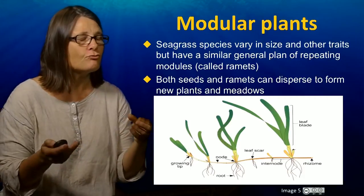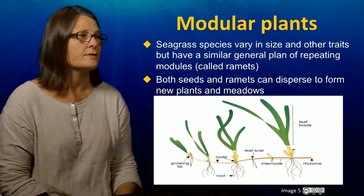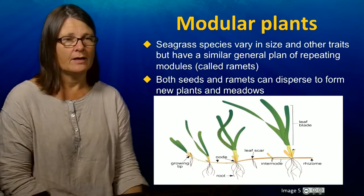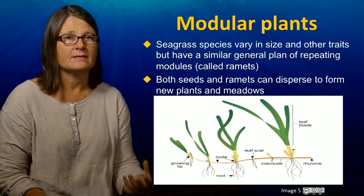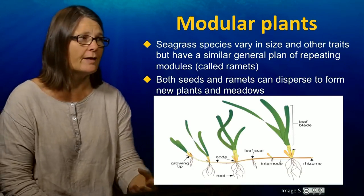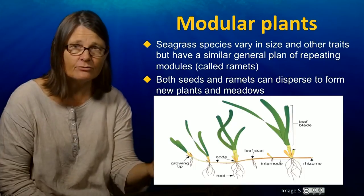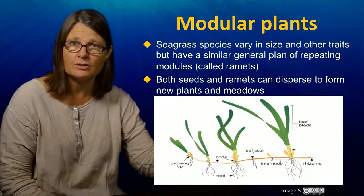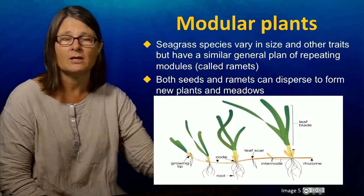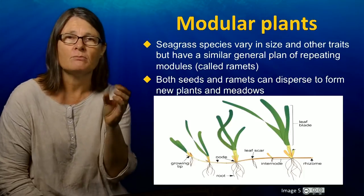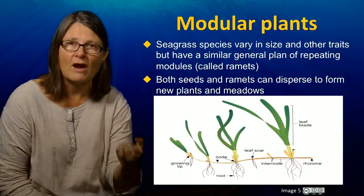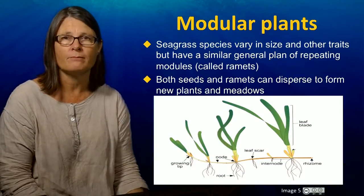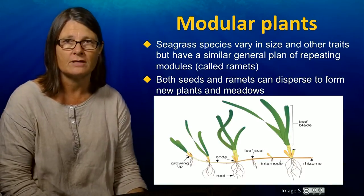Now those ramets, which are the modules, can be dispersed if the plant is disturbed. These plants have seeds for dispersal, where they can start new meadows. But also, they can start new meadows from ramets, or these modules. And that's a very important part of seagrass biology.